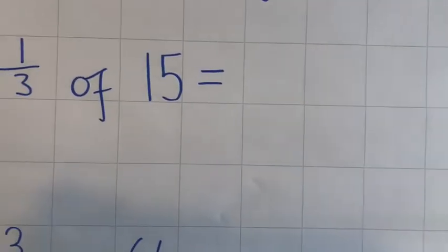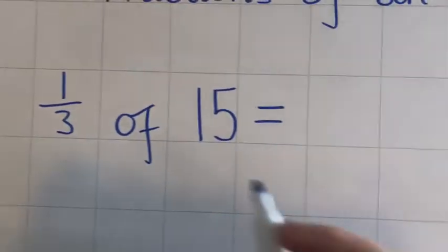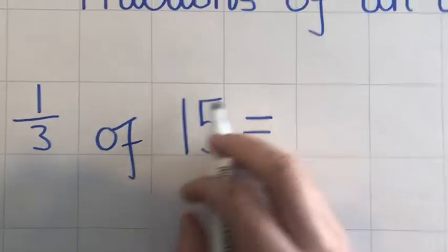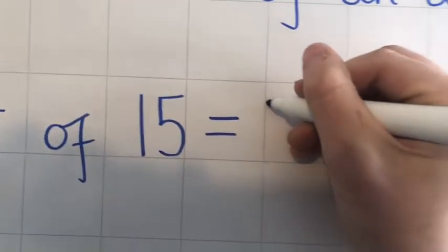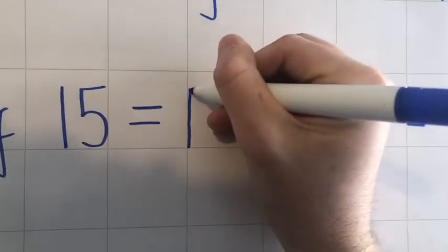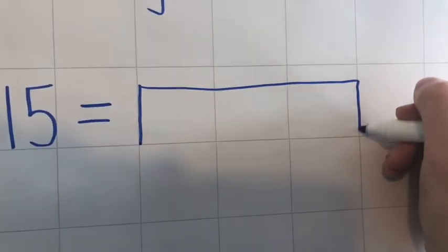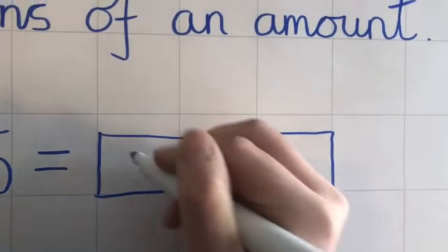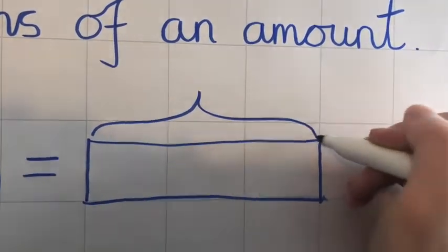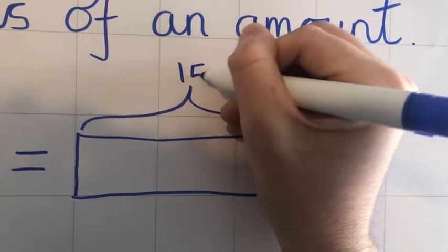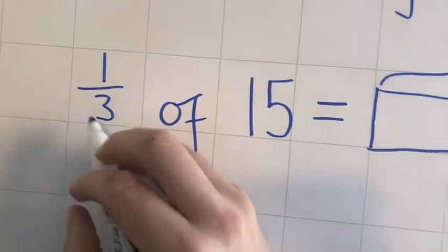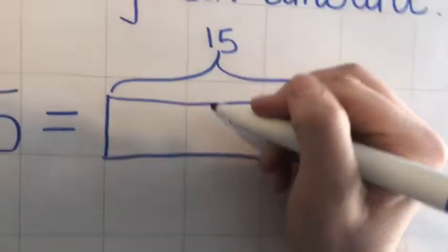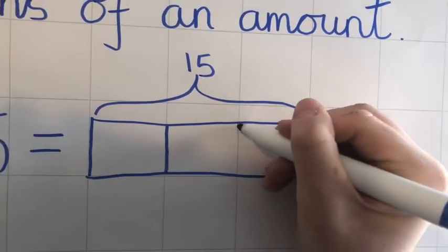So if we're splitting, or we're finding one third of 15, 15 is going to be the whole diagram. So I'm going to call that 15. And you know it's asking us to split it into thirds, so what I can do with my whole shape is literally split it into three equal parts.